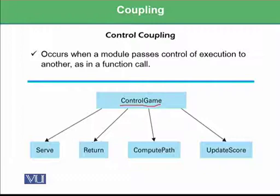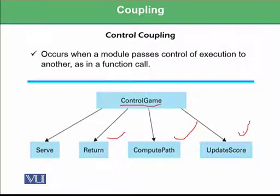Similarly, there is the 'return' module, the 'compute path' module, and the 'update score' module. Whenever a module passes control of execution to another, it is known as control coupling.